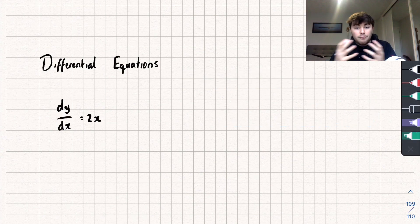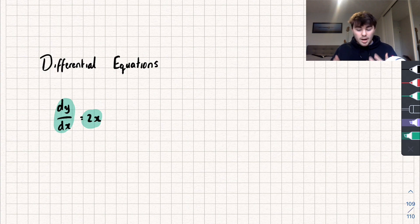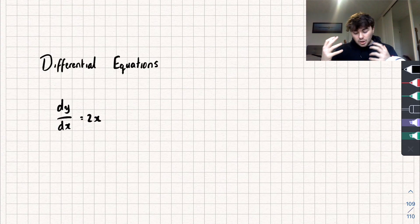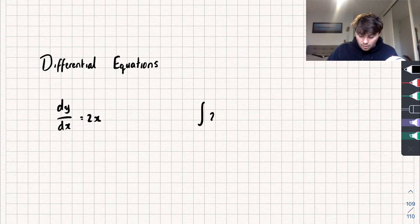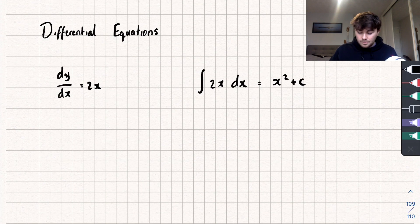When we're solving a differential equation we're looking for a function such that if we take its derivative it's equal to 2x. We do what's called taking the anti-derivative. We're going to look for a function such that if we differentiate it we get an answer of 2x. So we could find that function by integrating 2x with respect to x and we'll get a solution of x squared plus c.